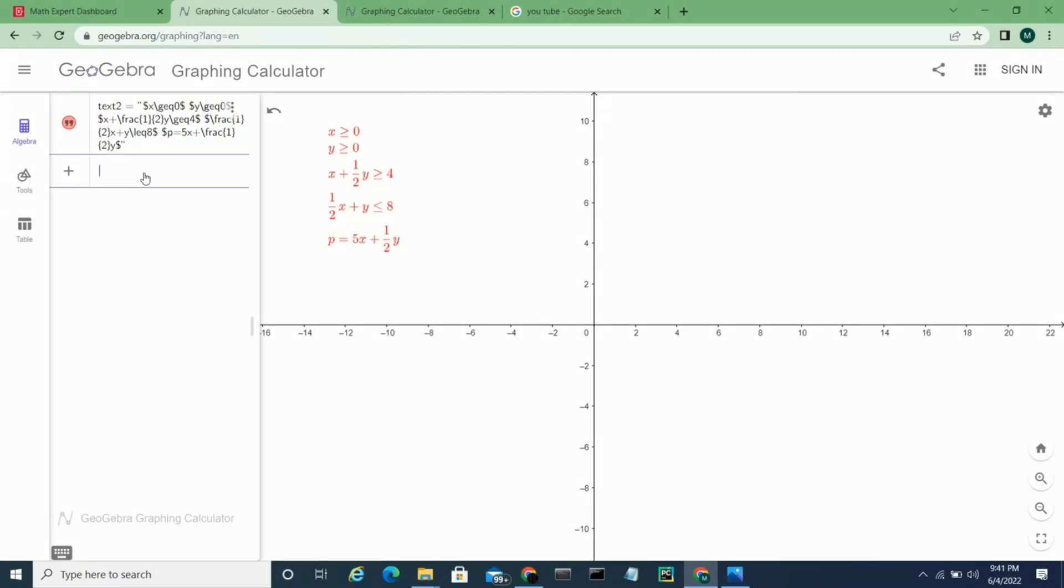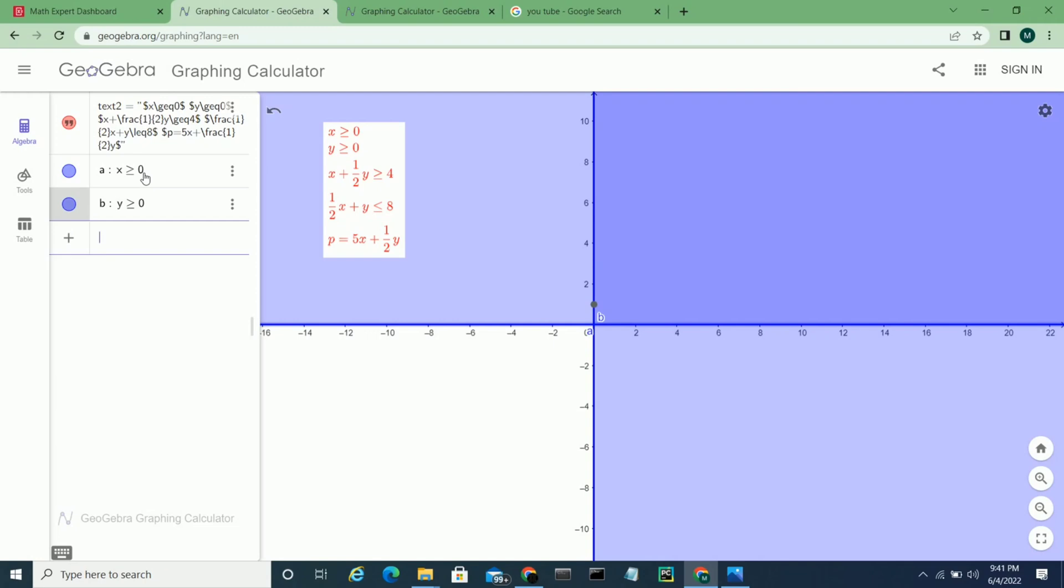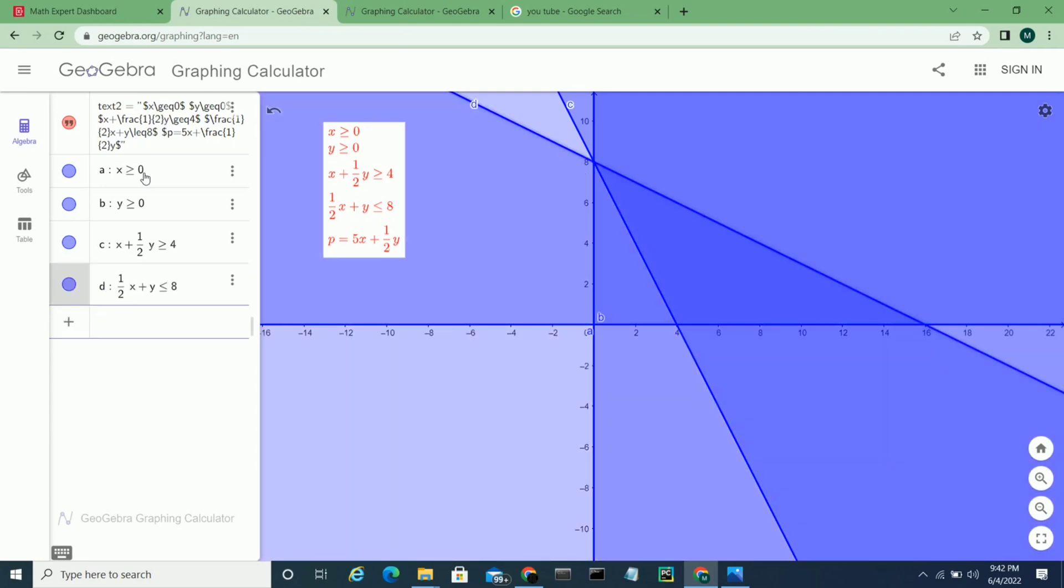Let x greater than or equal to 0, so this graph will be given. Y is greater than or equal to 0. Second constraint: x plus 1/2 y greater than or equal to 4. Now fourth condition: 1/2 x plus y less than or equal to 8. So these are four conditions or constraints.